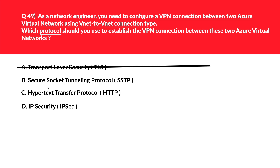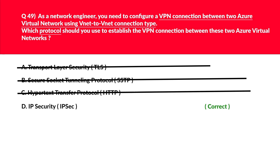Let's now look at option C, Hypertext Transfer Protocol. SSTP cannot be used to create a tunnel between two virtual networks, so this won't fit the question either. We'll reject this and lock D — IPSec — as the correct answer for this question.